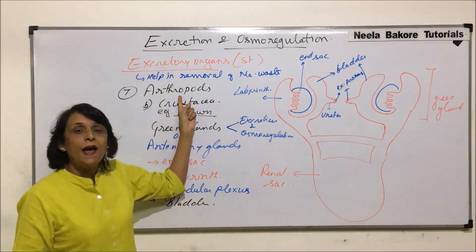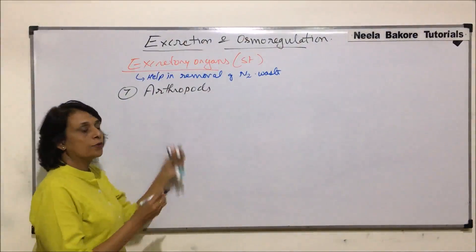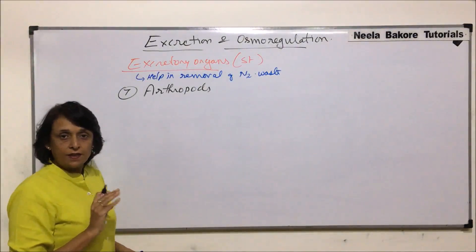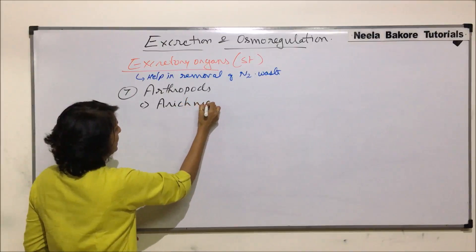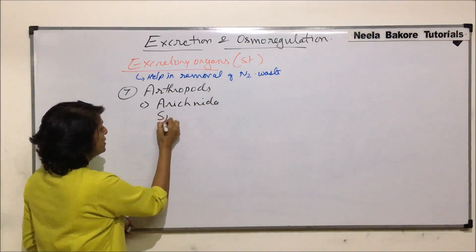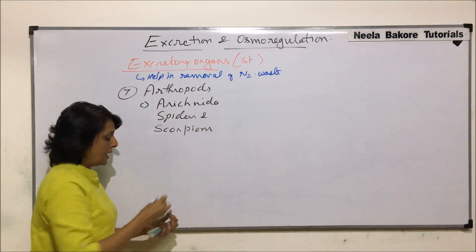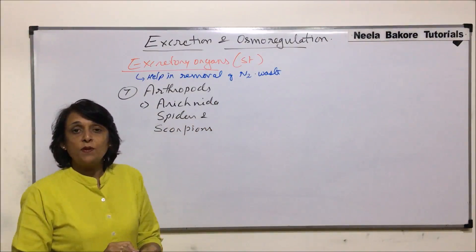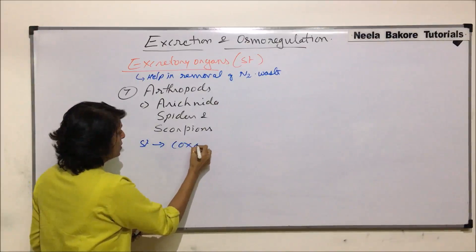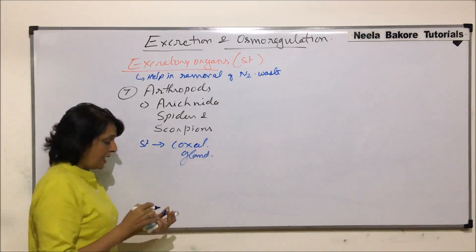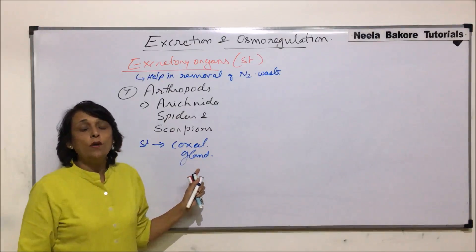The next group under the same phylum is Arachnida — that is, spiders and scorpions. In arthropoda, we have covered Insecta, Crustacea, and now the third group is Arachnida. In spiders and scorpions, there is a special type of structure known as the coxal gland. They are called coxal glands because they open in the coxa part of the hind legs.